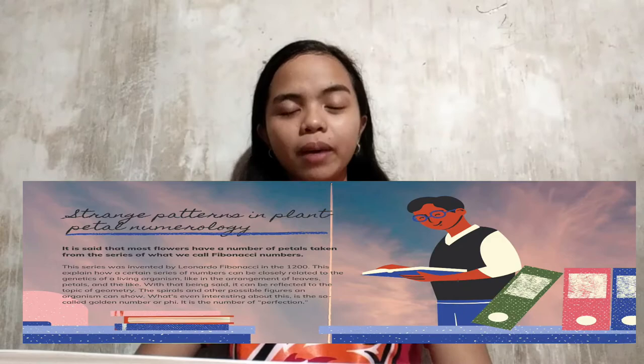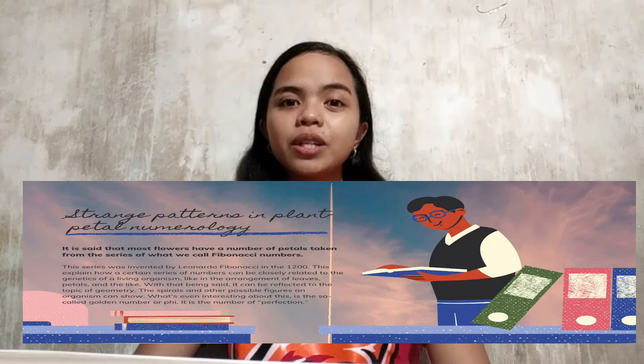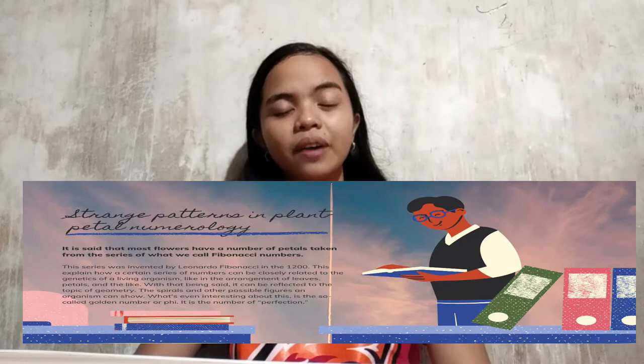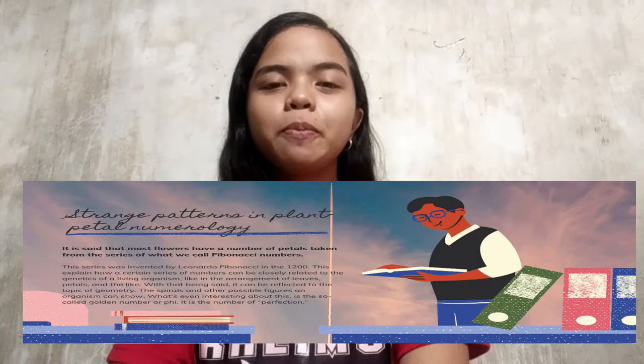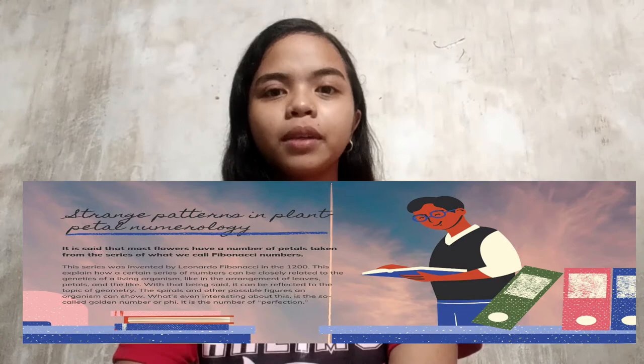Lastly, Fibonacci. It is said that most flowers have a number of petals taken from the series of what we call Fibonacci numbers. Funny how we grew up knowing that flowers normally have different numbers of petals depending on their kind — however, it says in the book that it somehow has something to do with genes. This series was invented by Leonardo Fibonacci in 1200. This explained how the series of numbers can be closely related to the genetics of living organisms, like in the arrangement of petals, leaves, and the like. It can be reflected in the topic of spirals and other possible figures an organism can show. What's even more interesting is the so-called golden number, or phi — it is the number of perfection.